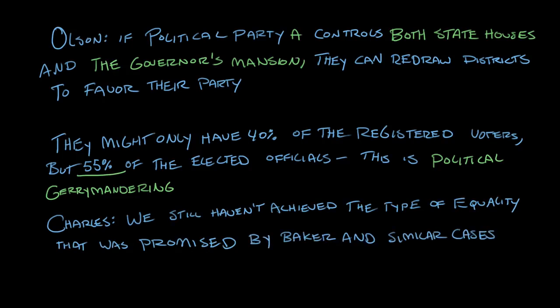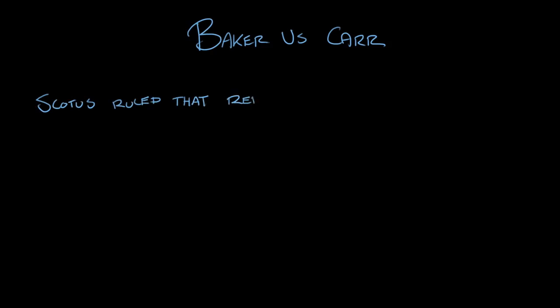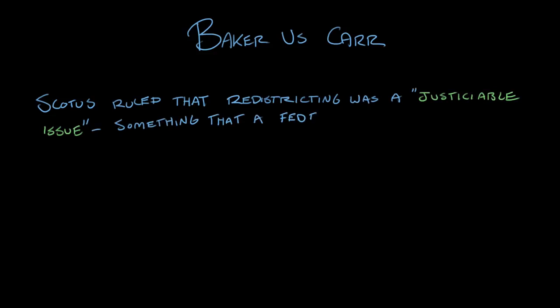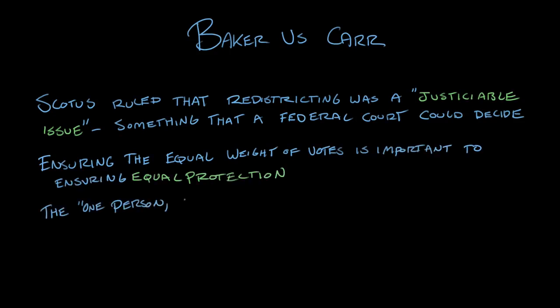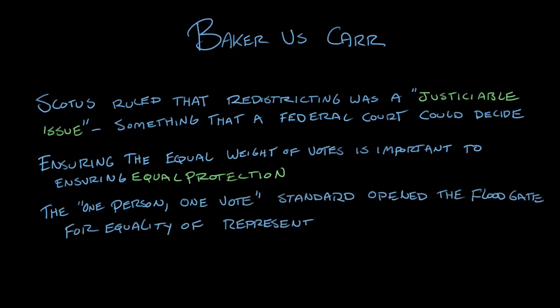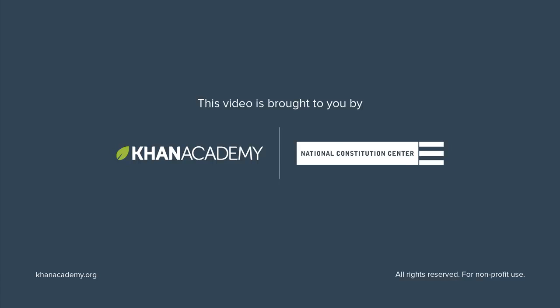So we've learned that in Baker v. Carr, the Supreme Court ruled that redistricting was a justiciable issue — something that the federal courts could decide — because ensuring that votes have equal weight is important to ensuring equal protection under the law. The standard of one person, one vote opened the floodgate for cases about equality of representation in districting, which are still being litigated at the Supreme Court today. To learn more about Baker v. Carr, visit the National Constitution Center's Interactive Constitution and Khan Academy's resources on U.S. government and politics.